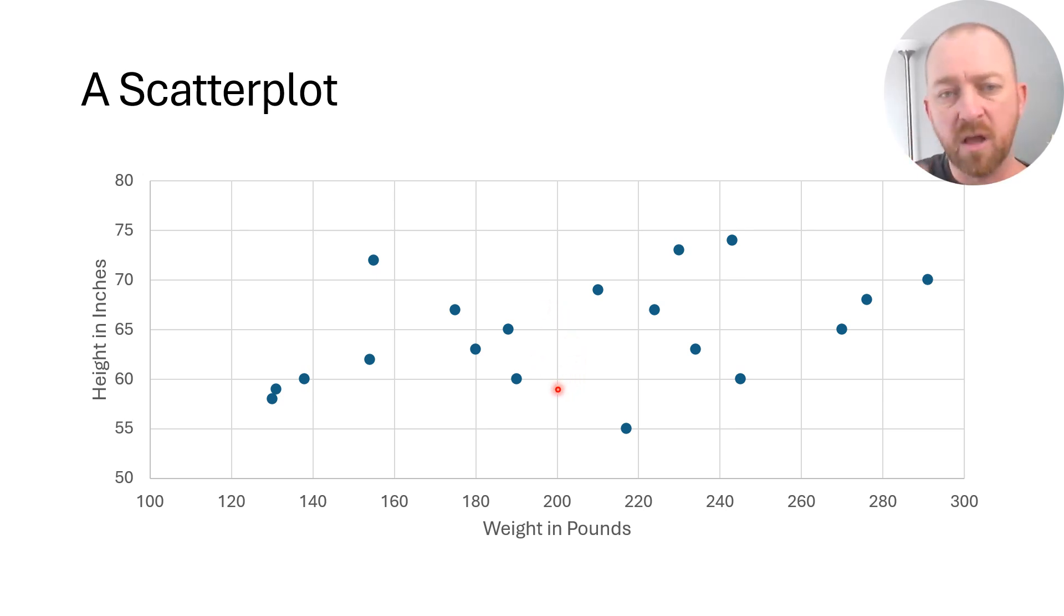You can estimate, given the other dots here, it seems like it would probably be in this area somewhere. Well, that's something, but that's all I can do with correlation. Now, with regression, it will allow me to apply a specific value to my guess so that it's based on the data relatively objectively.